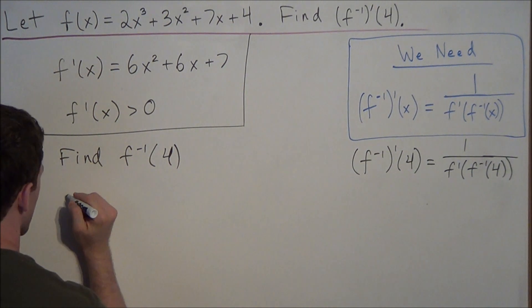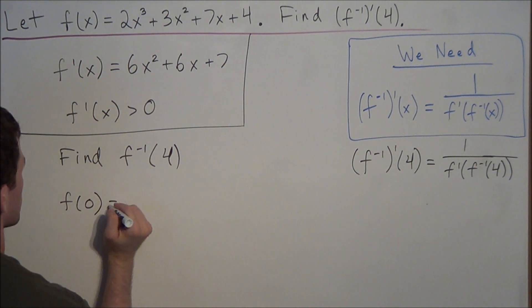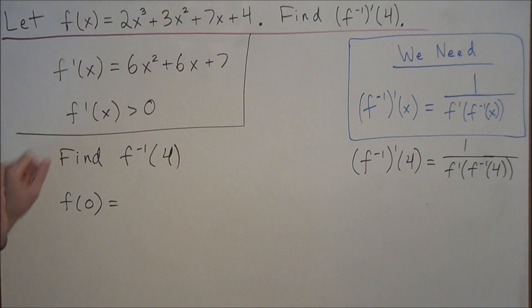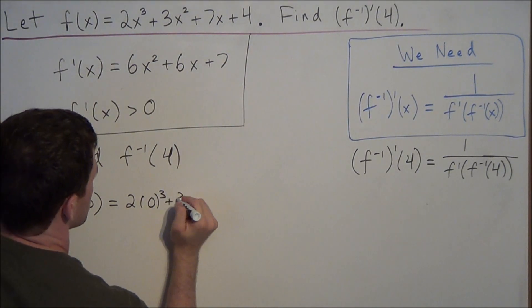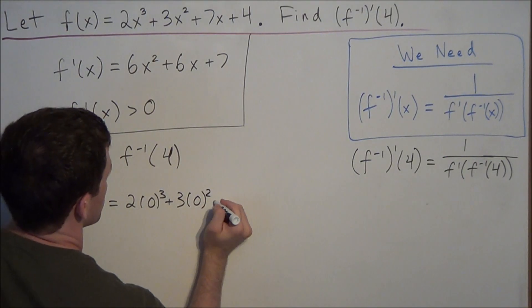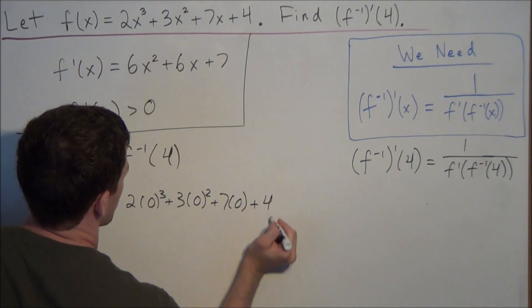So this tells us if we look at f of 0, f of 0 is equal to—and we'll just write it out—2 times 0³ plus 3 times 0² plus 7 times 0 plus 4. So f of 0 is equal to 4.